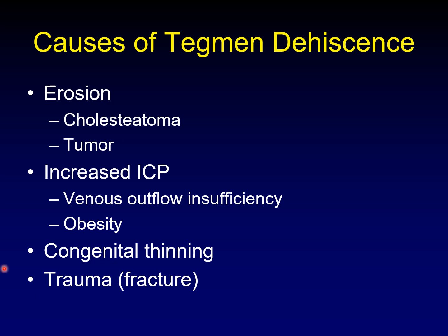So what causes gaps in the tegman? You can erode your tegman classically from cholesteatoma, sometimes from tumor. You can have increased intracranial pressure, whether from venous outflow insufficiency or obesity. There is sometimes congenital thinning, as in that normal thinning case I showed earlier. Fractures — whether oblique or longitudinal, otic capsule sparing or not — almost always involve the tegman. Sometimes you can get a purely horizontal fracture, but almost all temporal bone fractures will involve the tegman.